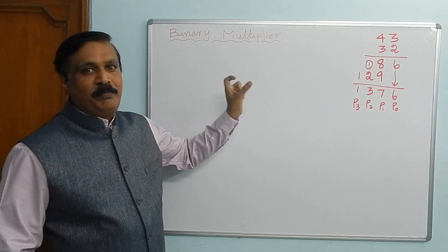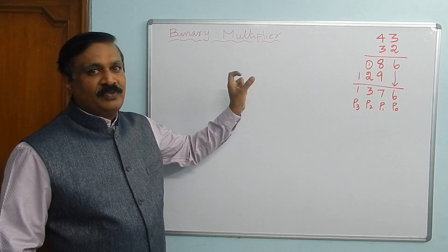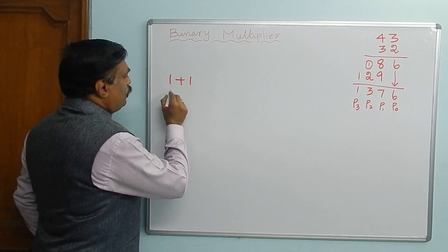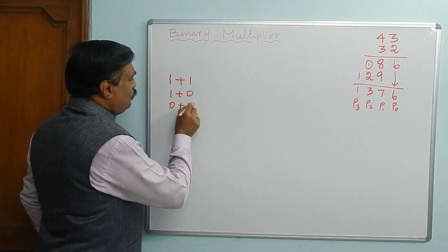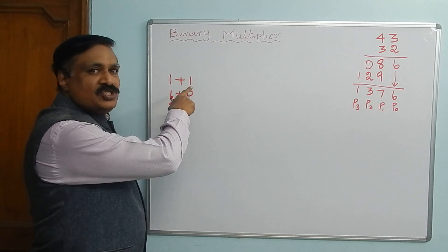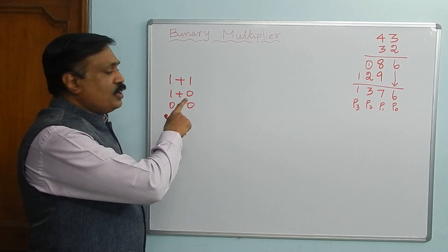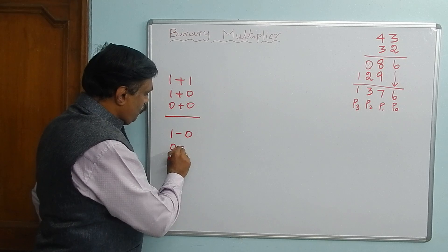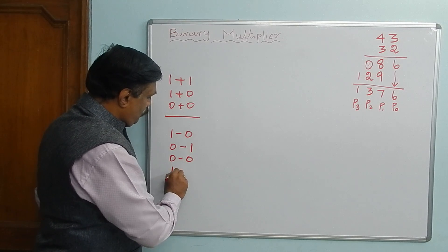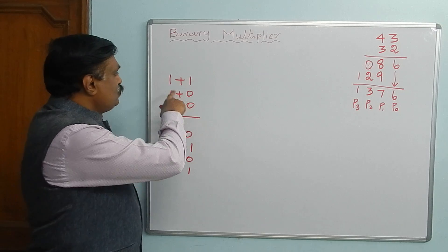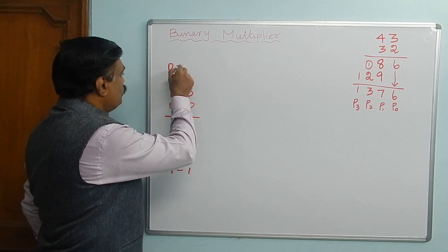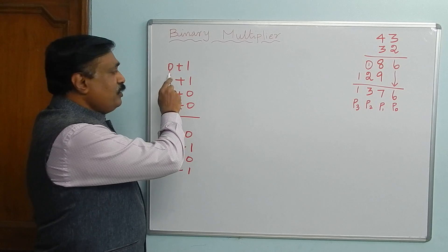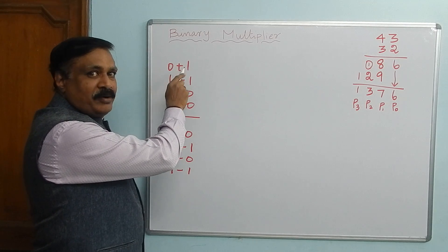That is how to multiply two binary numbers. In half adder we have seen, we have added 1 plus 1, or 1 plus 0, 0 plus 0 — only two bits can be added in a half adder. Half adder means you are adding two binary numbers or binary bits.